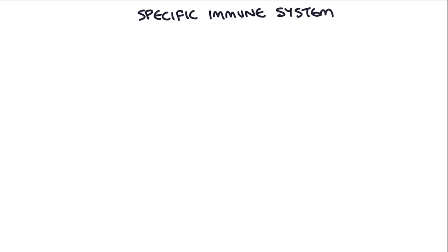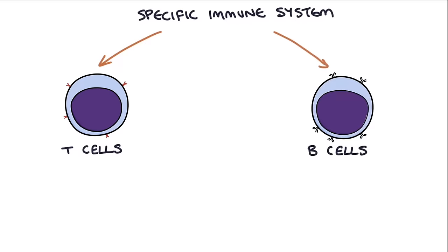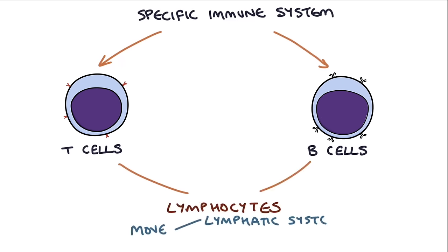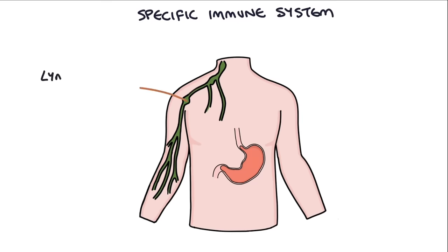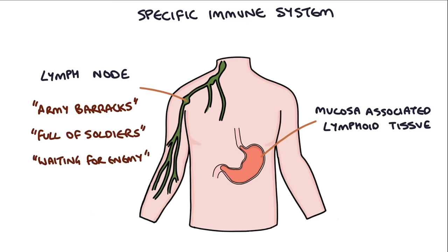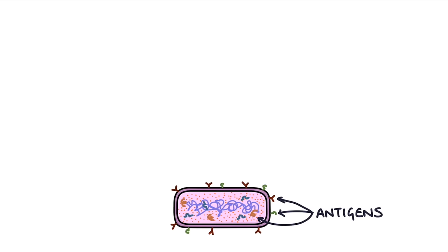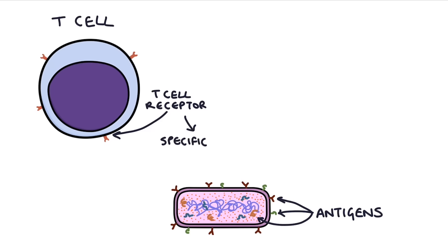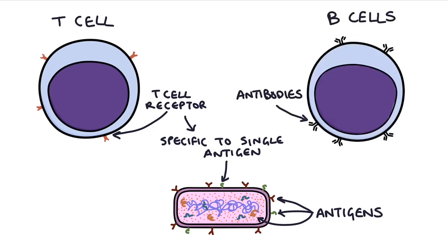That brings us onto looking at the function of the specific immune system. The specific immune system involves two characters, the T and the B cells, and these are both types of lymphocyte. They are free to float around the lymphatic system and the blood, but they spend most of their time in the lymph nodes and the mucosa-associated lymphoid tissue. Think of these lymphoid tissues as army barracks that are full of soldiers all waiting to get word of an enemy that they've specifically been trained to fight. Each pathogen has molecules that are unique to them, known as antigens. Each T cell has T cell receptors that are specific to a single type of antigen, and B cells have antibodies on their cell membrane that are also specific to a single type of antigen. The result is there are millions of different T and B cells that are all specific to a single type of antigen.